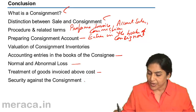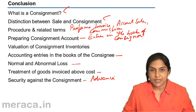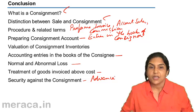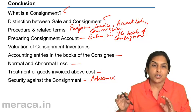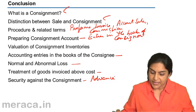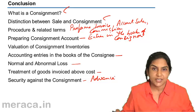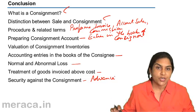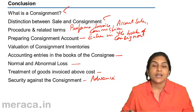Regarding security against consignment, we distinguished between an advance payment and security against consignment. The consignee holds the stock of goods belonging to the consignor, and very often pays an advance to the consignor as a certain percentage of the cost price or sale price of the stock held. It may either be an advance or in the form of security against consignment, where at any point in time a certain percentage of consignment stock held is kept as a security deposit with the consignor.